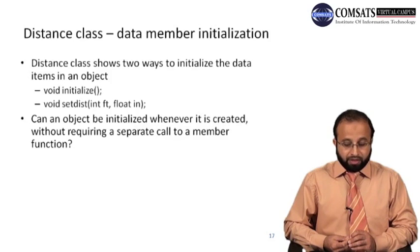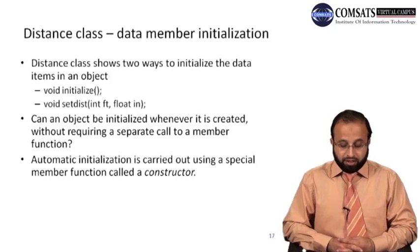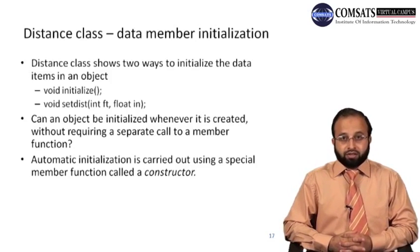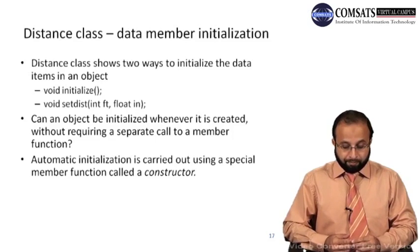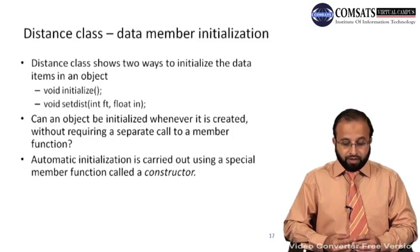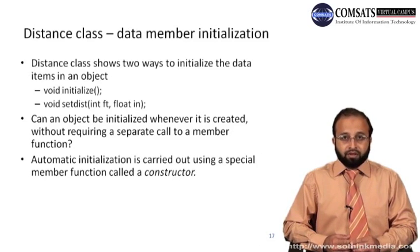Let me summarize today's lecture. We have seen the access specifiers private and public. We saw three examples: a GradeBook example, a Book class example, and a Distance class example. In the next lecture, we will see what a constructor is, why we need it, and what its function is, along with some examples.